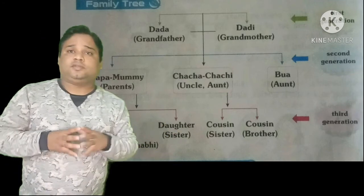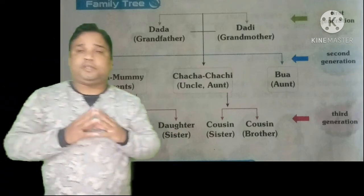Family tree recap: there are three types of family — nuclear family, large family, and joint family. Now I am giving you questions related to your chapter. You have to do it in your notebook. Thank you.